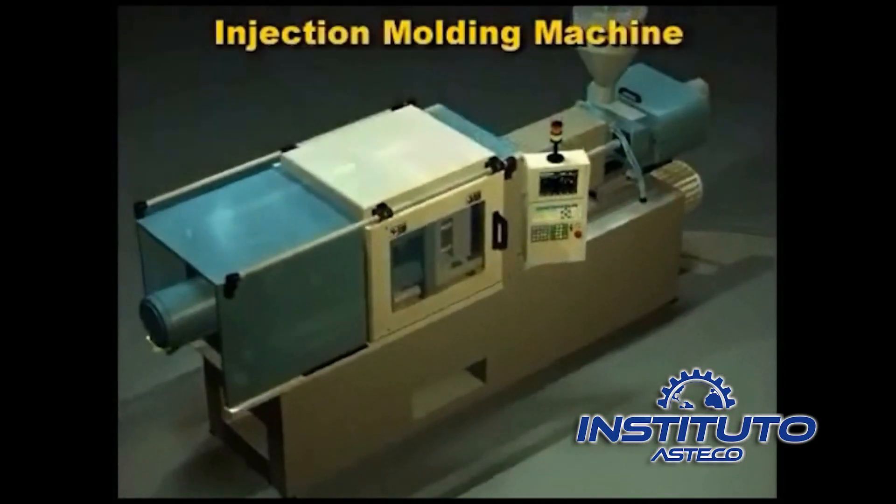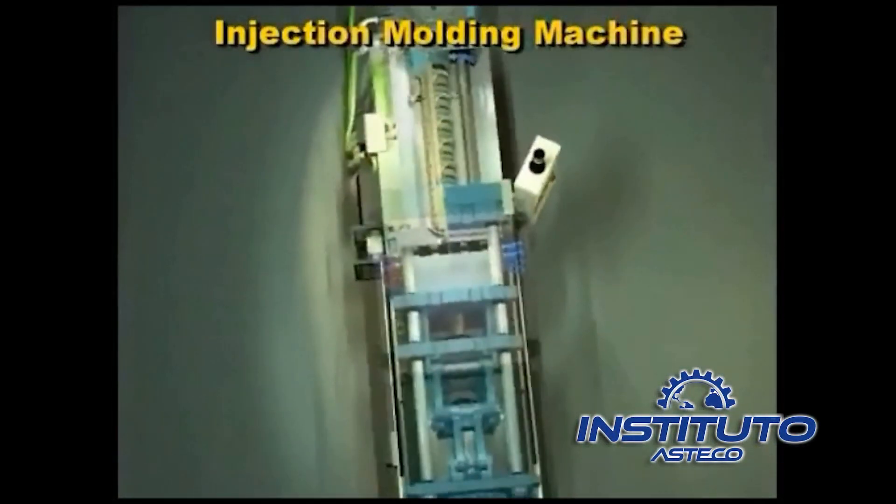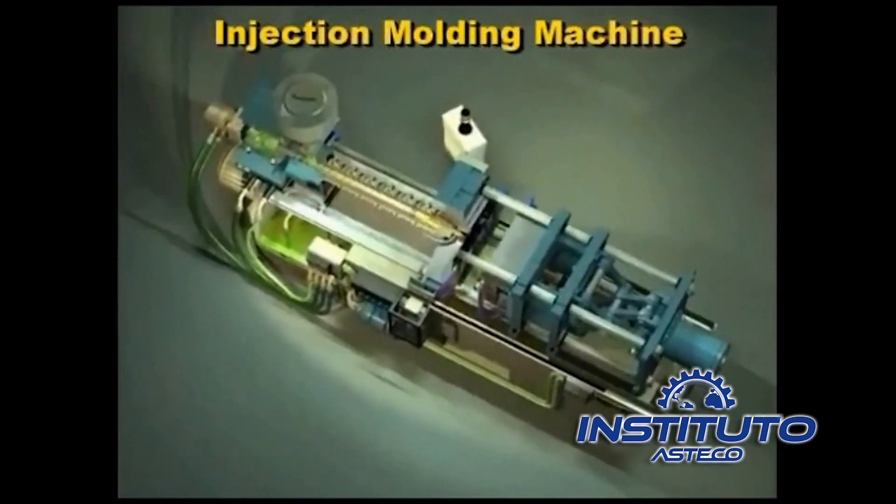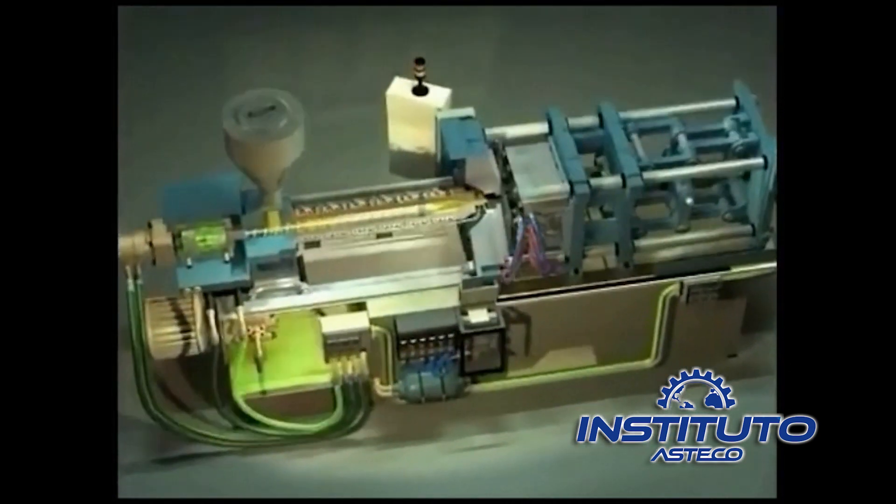To understand how an injection molding machine works, we'll use a cutaway drawing. This is the view from the backside of the molding machine.